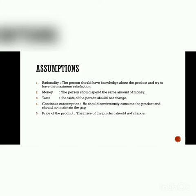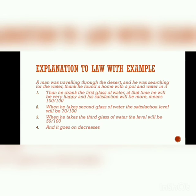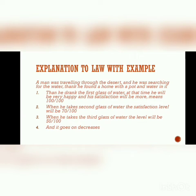Next assumption: continuous consumption. He should continuously consume the product and should not maintain a gap. For example, first glass satisfaction level is 100, next is 70. If there is a gap — like in the morning — then the thirst returns and the satisfaction level resets to 100. So there are gaps in the middle and it will not work out. There must be continuous consumption with no gap.